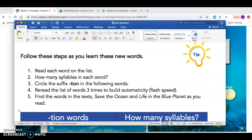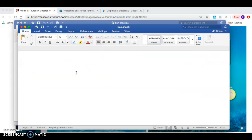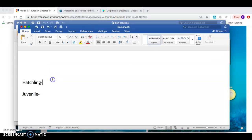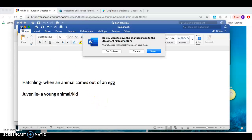So get out your glossary or turn to the back and let's add these words. Hatchling. Juvenile. And as you can see, we can put the definitions based on the picture. Hatchling: when an animal comes out of an egg. Juvenile: a young animal, a kid animal. So go ahead and take a few minutes to write these definitions in your glossary. You can press pause if you need more time to write them. All right, good job. We're going to move on.